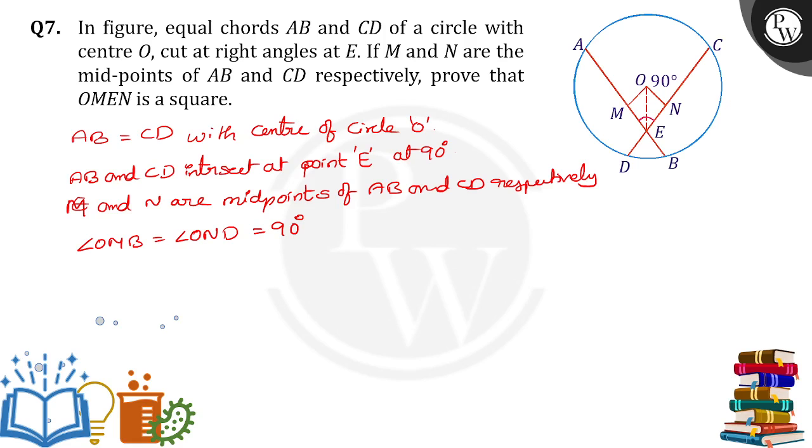Angle OMB is equal to 90 degrees. Angle OND is also 90 degrees. Why? Because they both are maintaining equal distance from the center of the circle. And OM is equal to ON also.